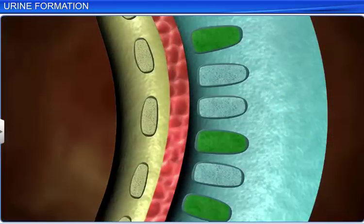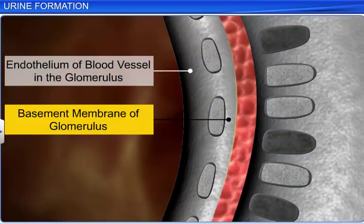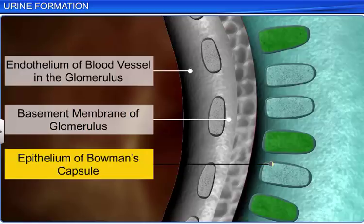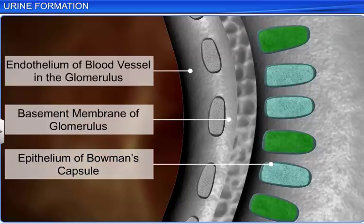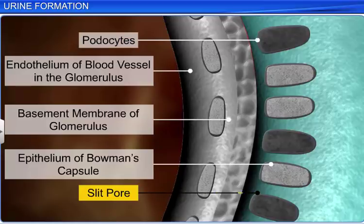The pressure of blood in the glomerular capillaries forces the blood to pass through three layers: namely the endothelium of the blood vessel or capillary, the basement membrane of the glomerulus, and the epithelium of Bowman's capsule. The epithelial cells in Bowman's capsule, also known as podocytes, are intricately arranged, leaving a few minute openings called slit pores or filtration slits.